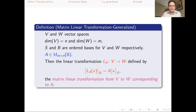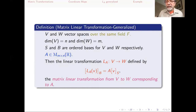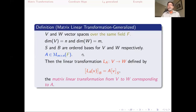For those on a second round of linear algebra: the vector spaces don't have to be over the reals. They can be over any field — complex numbers, rational numbers, integers mod seven, rational functions — as long as both spaces are over the same field. In that case, the entries of the matrix should also come from that field, and the same construction works properly.